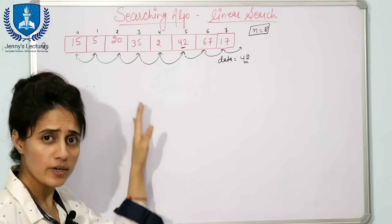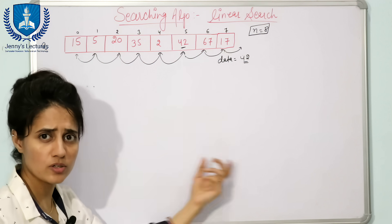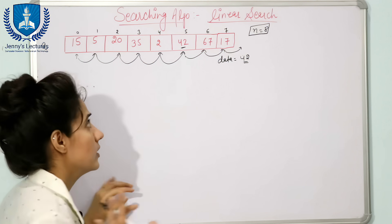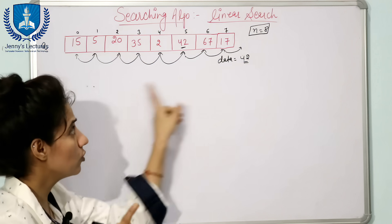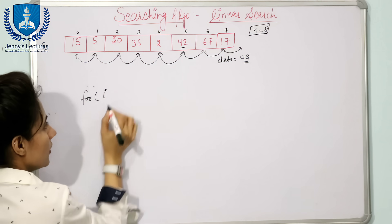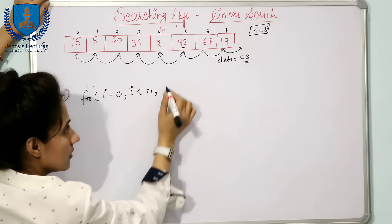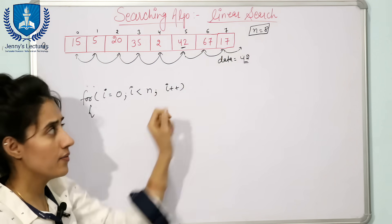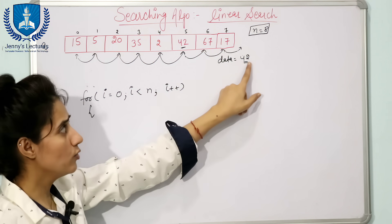Now how to write the code. You can write the iterative method using a for loop, or write a function for linear search and call it from main. I'm going to follow the iterative approach with a for loop. We start the loop from the 0th index and it goes till the end. We take a variable i, starting from 0, i less than n, and i++. Since n is 8, it goes from 0 to 7.